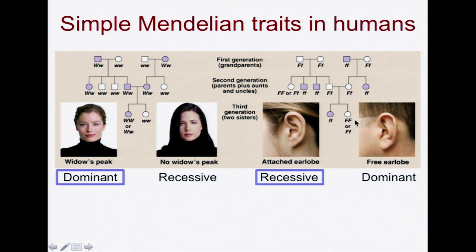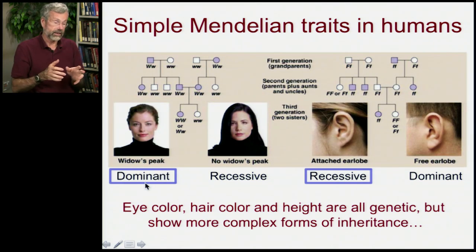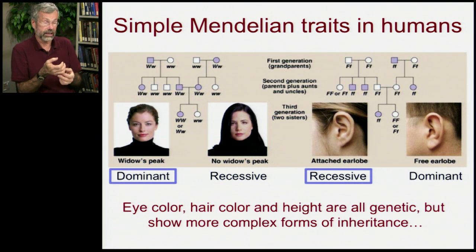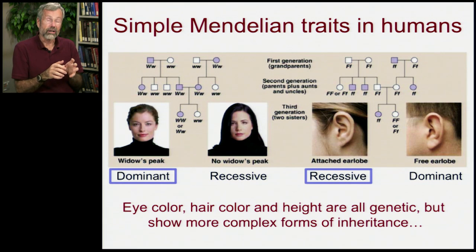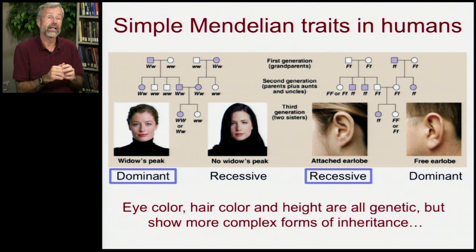The other, again, we don't know if it's homozygous for the free earlobe or whether it's another heterozygote, but they have different phenotypes. So with simple Mendelian genetics, we're tracking through one generation after the other, and we see the reappearance of these traits coming and going because there's complete dominance with a single locus trait. Those are the easiest ones to talk about in class. Some traits we might find more interesting — like eye color, hair color, and height — are likewise genetic, but they show much more complex forms of inheritance, as I'll outline in a minute.